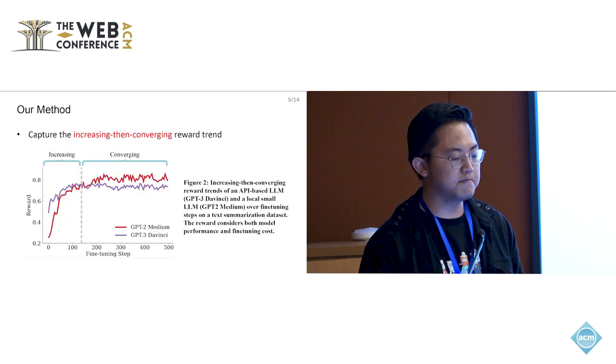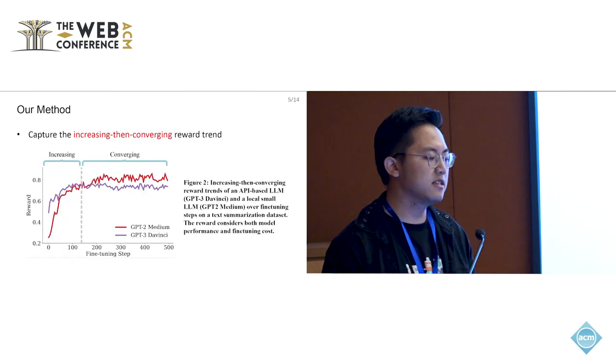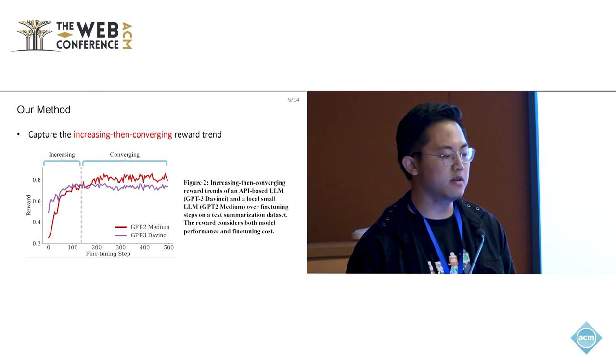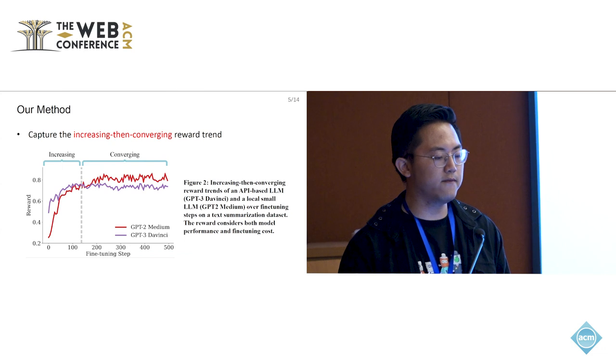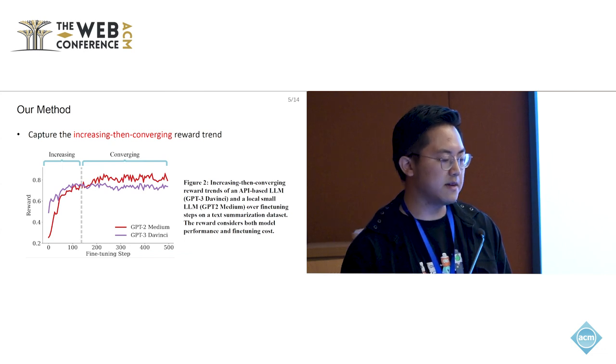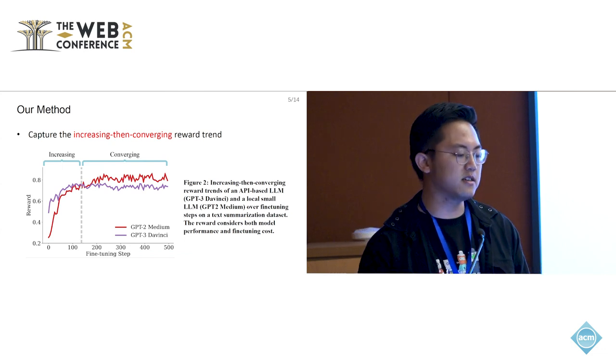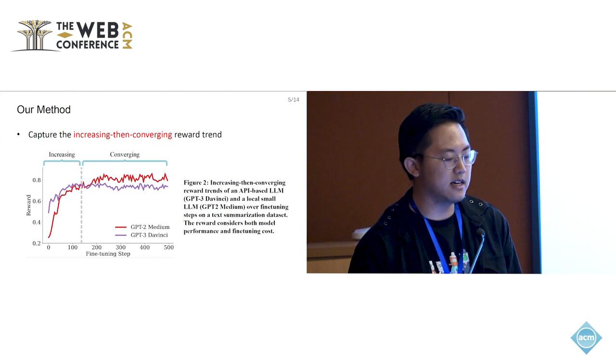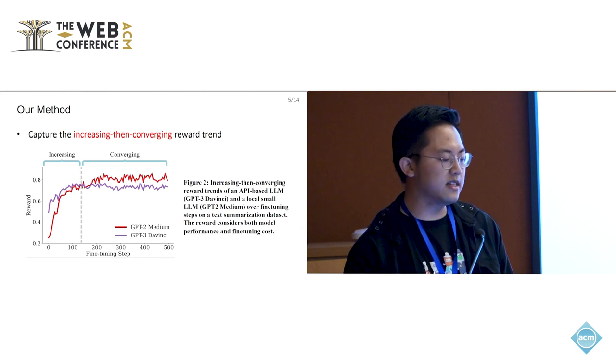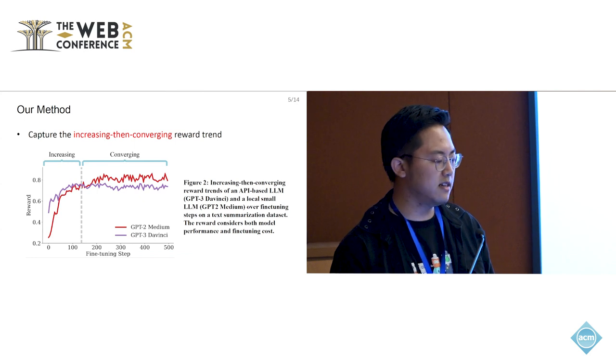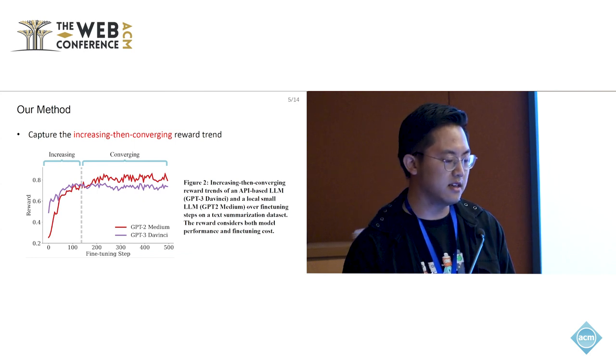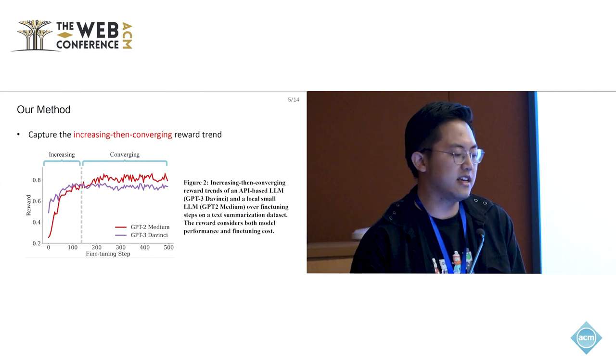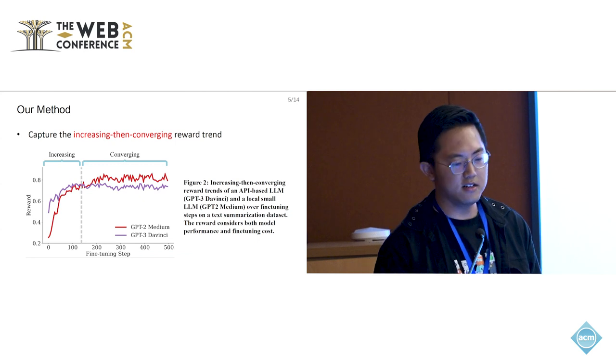In our method, we first need to capture the increasing then converging reward trend. I believe most of you have observed such kind of trend in training a model. For example, in a classification task, the model prediction accuracy will first increase rapidly and then converge to a stable state because the accuracy cannot exceed one.